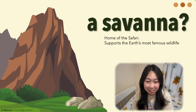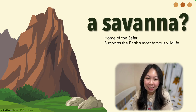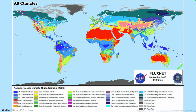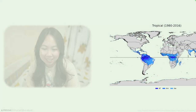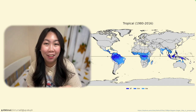The savannah is home of the safari, and it supports the Earth's most famous wildlife. The savannah is the tropical rainforest's much drier counterpart. Shown here is the Copenhagen Climate Classification. If you look at the lower left among the blue shades, you will find the tropical savannah designated as AW or AS — A which means tropical, and W and S as winter and summer. The savannah, along with the tropical rainforest and tropical monsoon, is found along the equator.